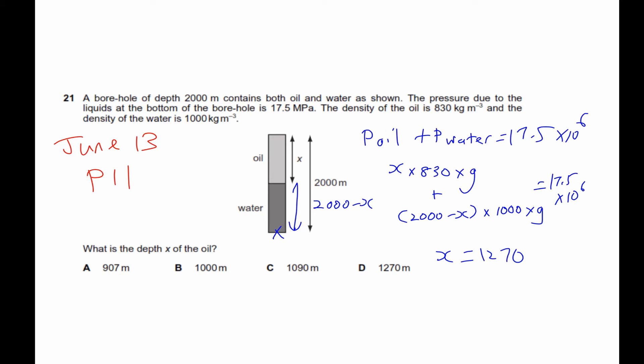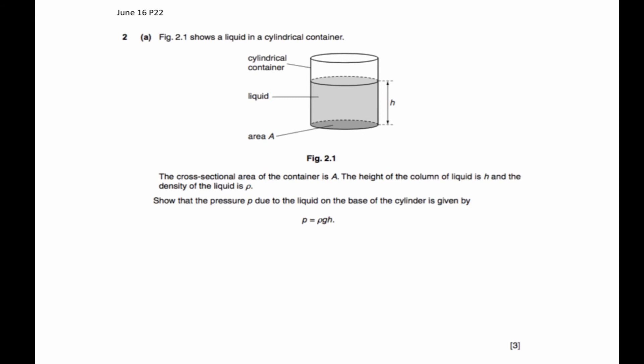If the pressure here is known, which is 17.5 megapascals, it must be due to the column of water plus the pressure due to the column of oil. So pressure due to the column of oil will be x times density of oil times g. Pressure due to the water will be this height, which is 2000 minus x, times the density of water times g. So by solving this equation, you will get x is 1270.